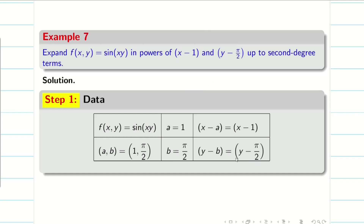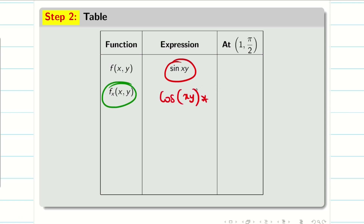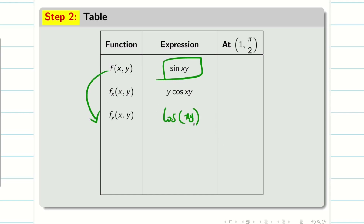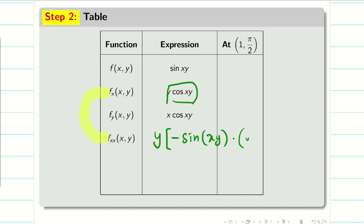Step 2: we should be careful while differentiating sin(xy). For fx: differentiating sin(xy) partially with respect to x gives cos(xy) · y, so fx = y·cos(xy). For fy: differentiating sin(xy) partially with respect to y gives cos(xy) · x, so fy = x·cos(xy). For fxx: differentiating fx = y·cos(xy) partially with respect to x, y is constant, and cos differentiates to −sin, giving −y²·sin(xy).